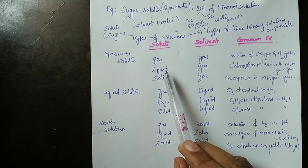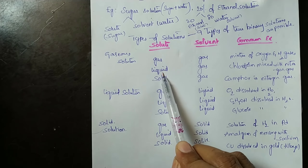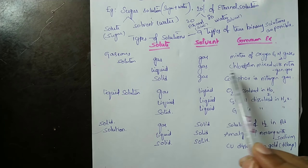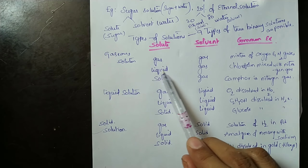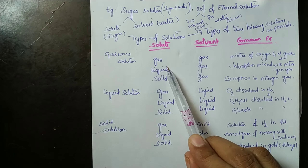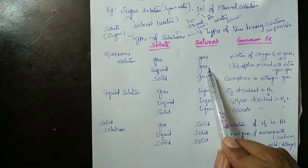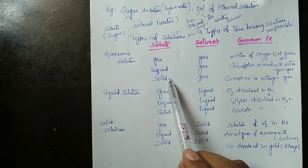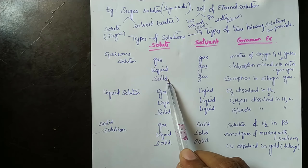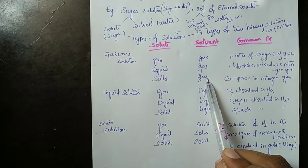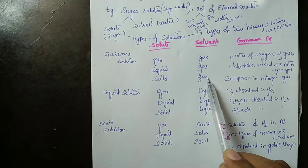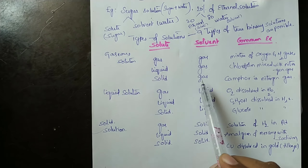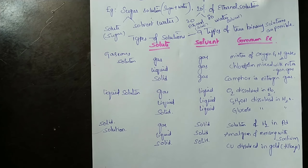When the solute is liquid and solvent is gas, an example is chloroform liquid mixed with nitrogen gas. When the solute is solid and solvent is gas, an example is camphor solid in nitrogen gas.